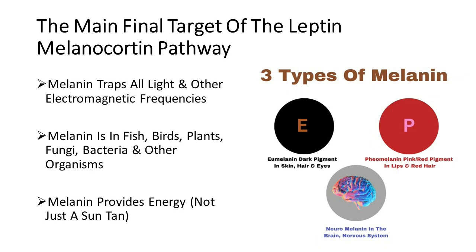The main final target of the leptin-melanocortin pathway, which has POMC involved in it as well, is melanin. There are different types of melanin — it's a dark pigment that traps all light frequencies as well as other electromagnetic frequencies, and it's ubiquitous in biology, found in fish, birds, plants, fungi and bacteria. The three main types are: eumelanin (the dark pigment in skin, hair and eyes), pheomelanin (the pink and red pigment in lips and hair), and neuromelanin (found deep inside the body in the brain and nervous system).